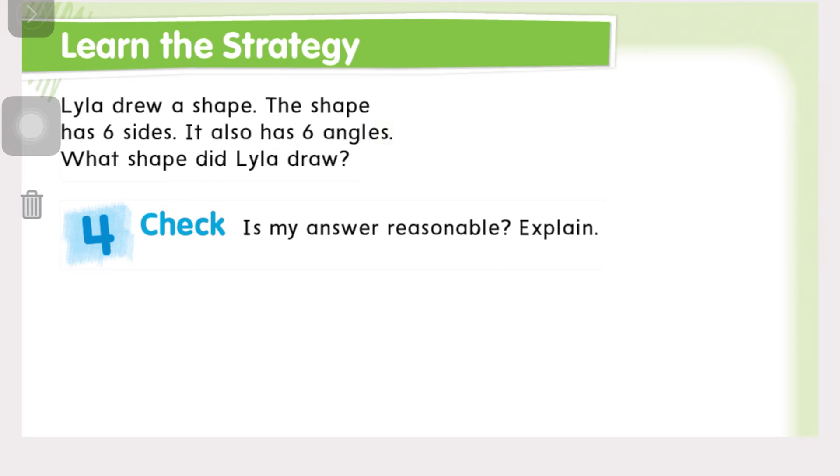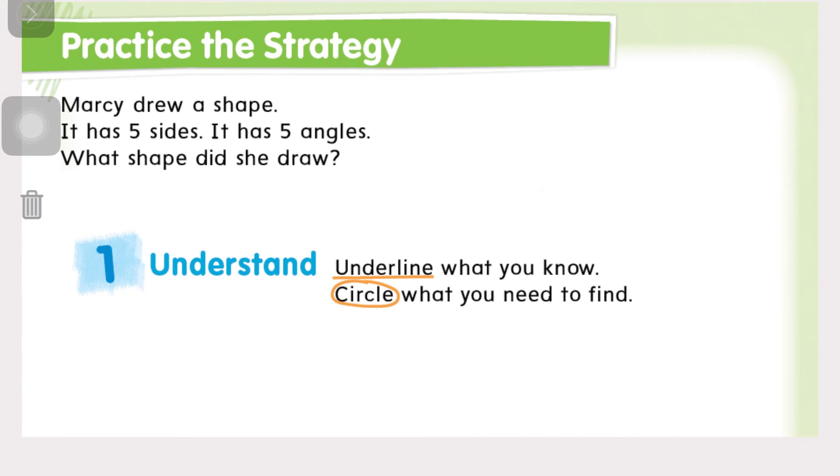So we are good to go. So now that we have learned the strategy, it's time for us to practice the strategy. So go ahead, open up your math book to 752. And we're going to practice our strategy using the steps that we just learned. So step number one is to understand. We're going to underline what we know and circle what we need to find. And then step two is to plan